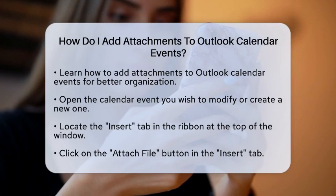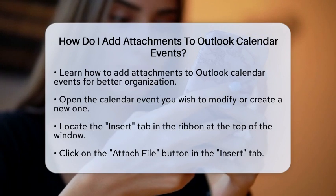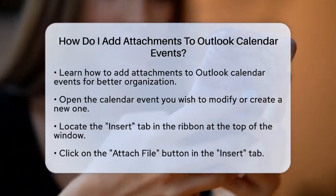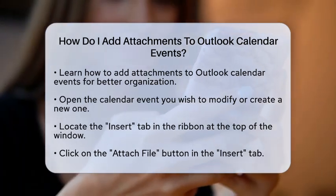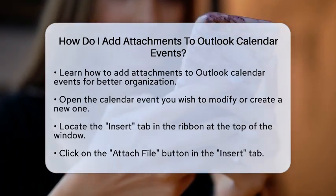First, you need to open the calendar event where you want to add an attachment. This can be a new event you are creating or an existing one that you want to modify.